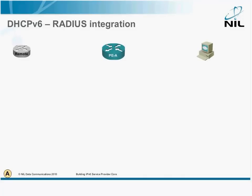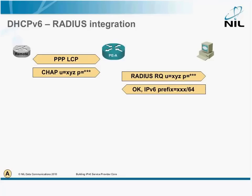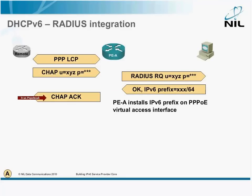Next, integration with RADIUS. This obviously only works over PPPoE. A PPPoE session is established, PPP-LCP starts, and after LCP starts, we run CHAP. With CHAP, the PE router collects the username and the password and then goes and asks the RADIUS server. The RADIUS server responds with the IPv6 prefix that should be assigned to the Virtual Access Interface — this is the prefix for the link. The CHAP acknowledgement goes back.